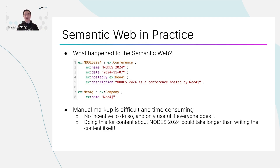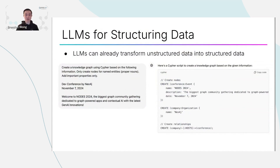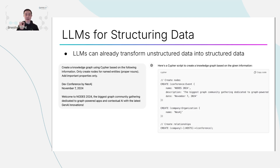But what if you can use AI for this purpose? And that takes us into the present. The great news is that LLMs can already transform unstructured data into structured data. Here is an example of putting a short prompt into ChatGPT — specifically GPT-4o — and turning a snippet about Nodes 2024 pulled from the website into the same structured data we saw in the previous example. Here it's able to generate something very similar in Cypher: Nodes is a type of event, it is occurring on November 7th, 2024, and it's hosted by Neo4j.